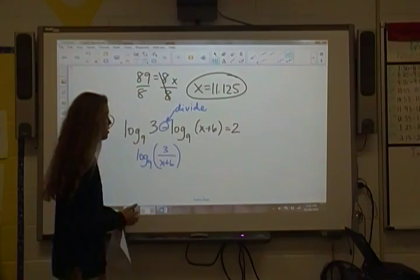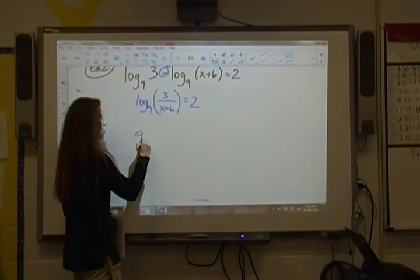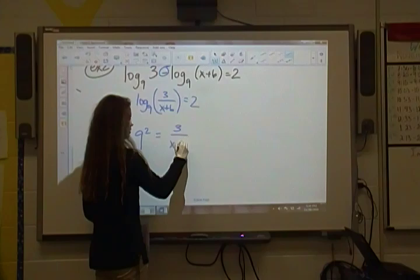And now we can switch forms. So 9 squared, because base is 9, logs are equal to exponents, equals 3 over x plus 6. I'll solve that and get 81 over 1, because I want to cross multiply here.